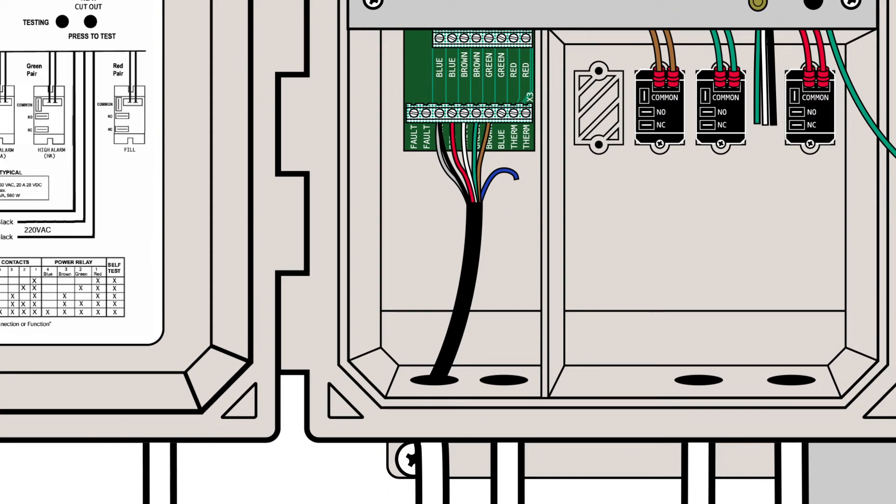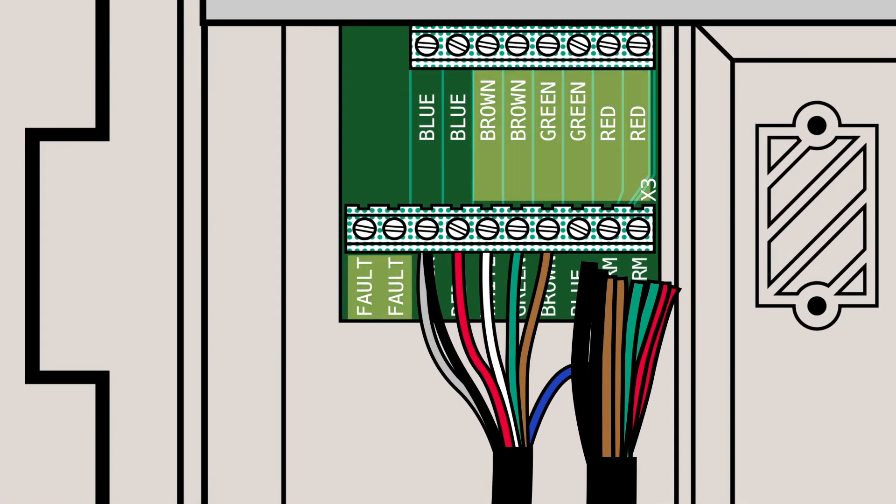The connections for the building management systems use normally open relays that close when the switch is activated. These connections come into the low voltage area and connect to the top terminal block with two positions in the lower terminal. These will indicate the state of the water level control switch points, including a power loss instance.